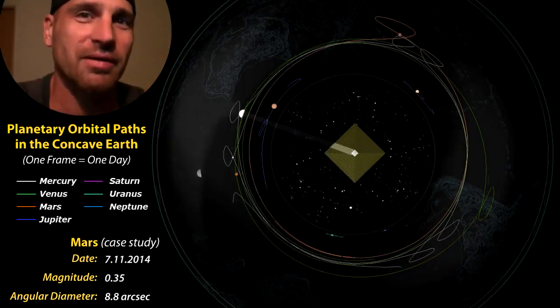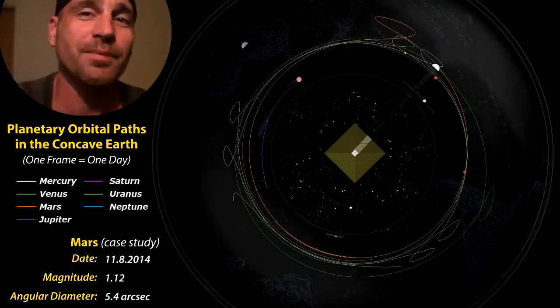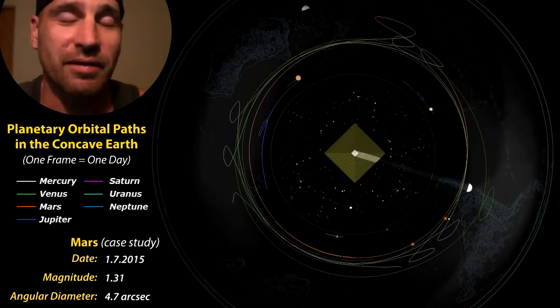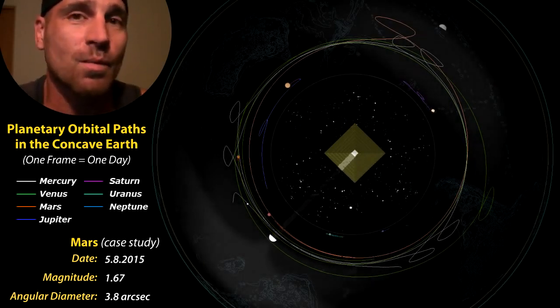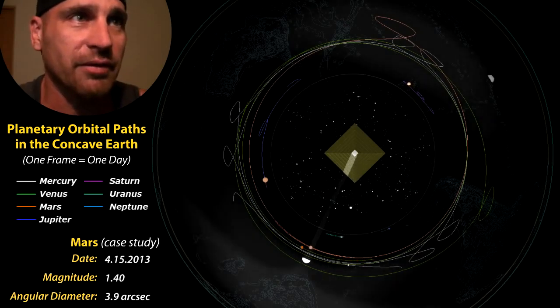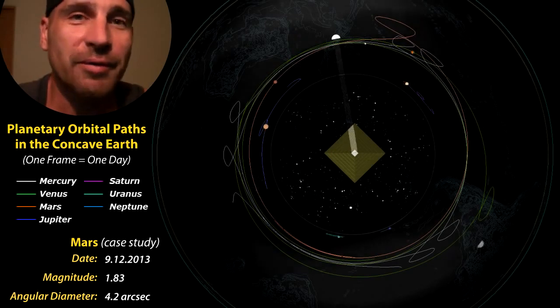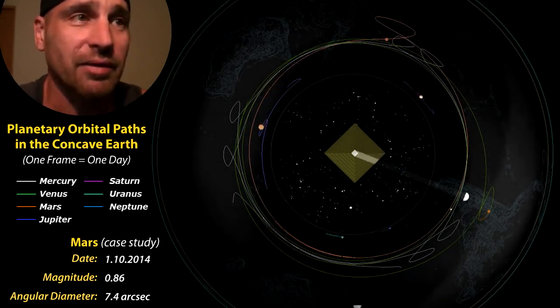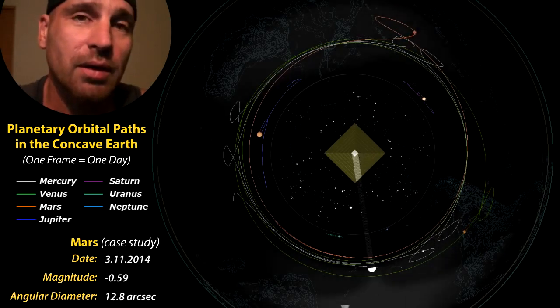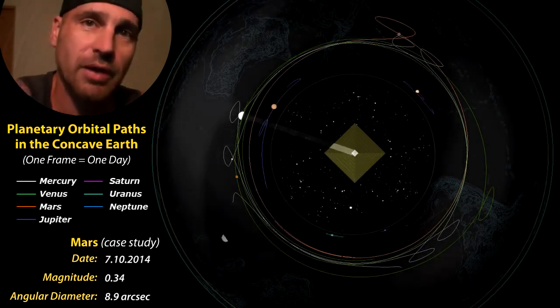So this is revolutionary. Pretty soon this is going to be the standard model. It's just a matter of time because it makes sense. Earth is stationary. The celestial sphere is moving. The Sun is moving. The Moon is moving inside the Earth. However, we don't really have much time because I do believe the Sun is going to stop pretty soon. And that will constitute the final day and the final hour. So, welcome to the new world. Welcome to reality. Ciao.